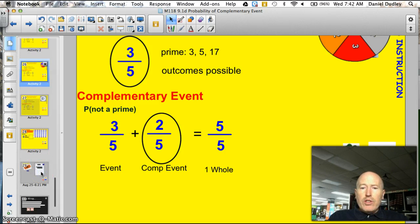Alright, here is your take it to the show. What's the probability on a standard die of rolling a 5 or a 6? And what's the complementary event of not rolling a 5 or 6? Don't forget to express those in simplest form.